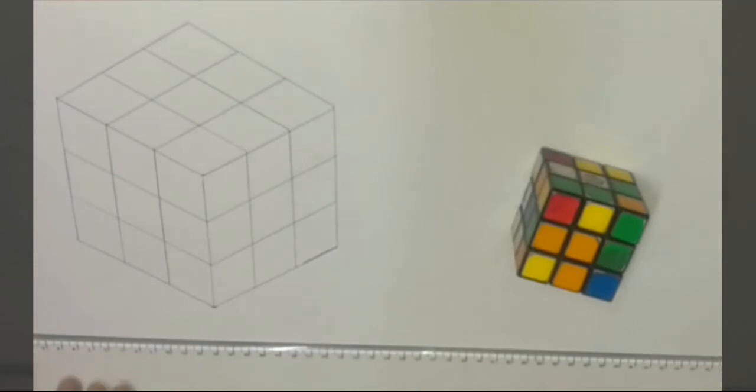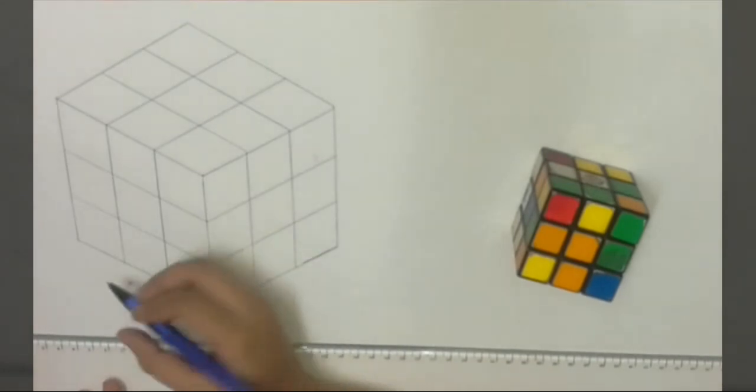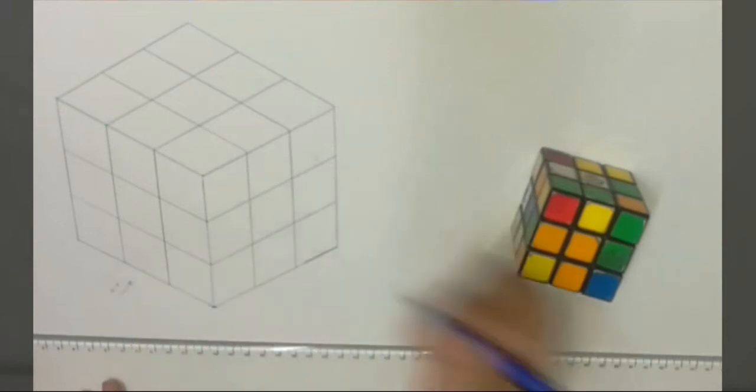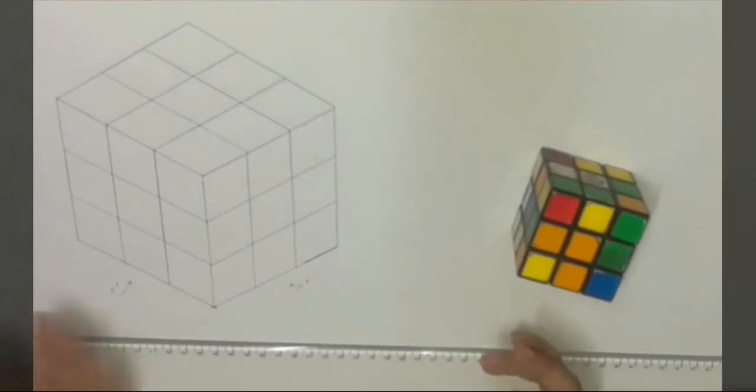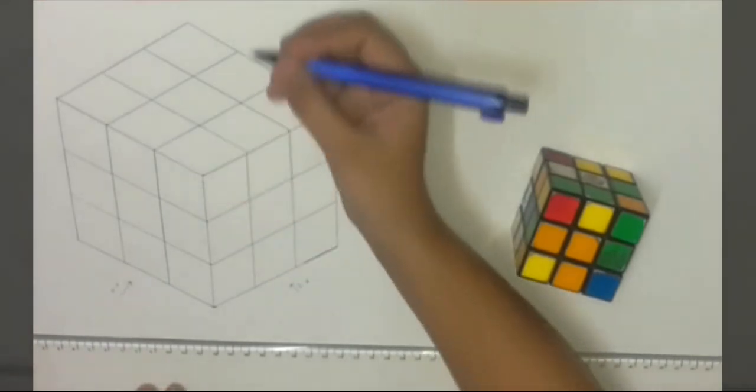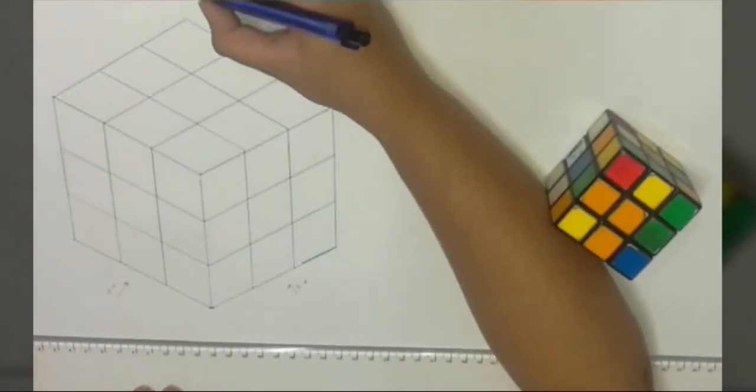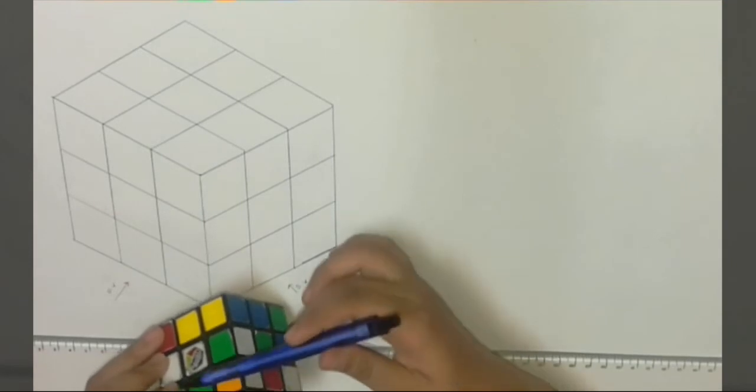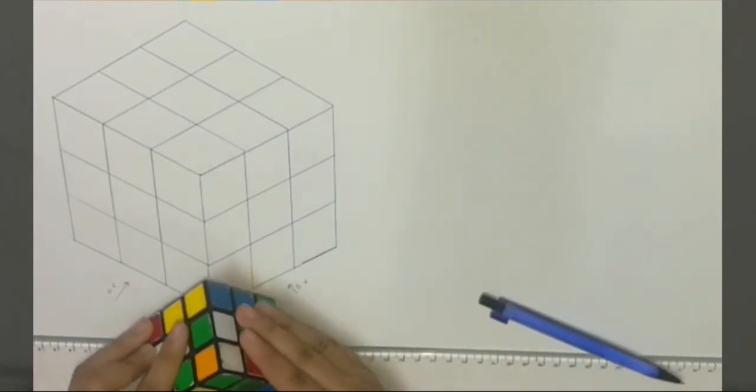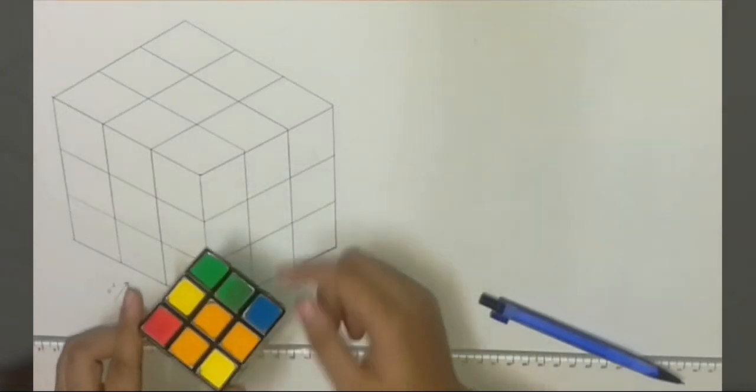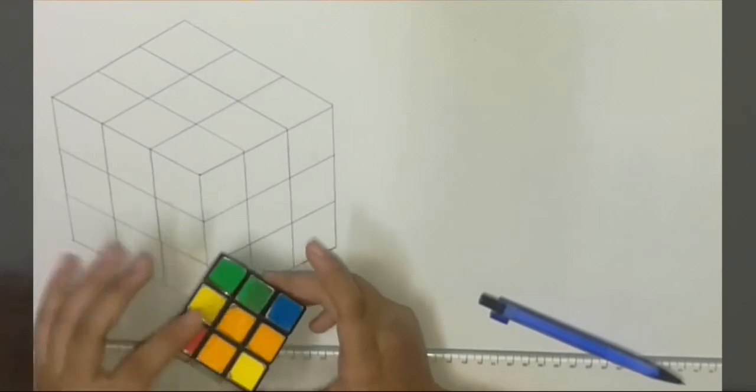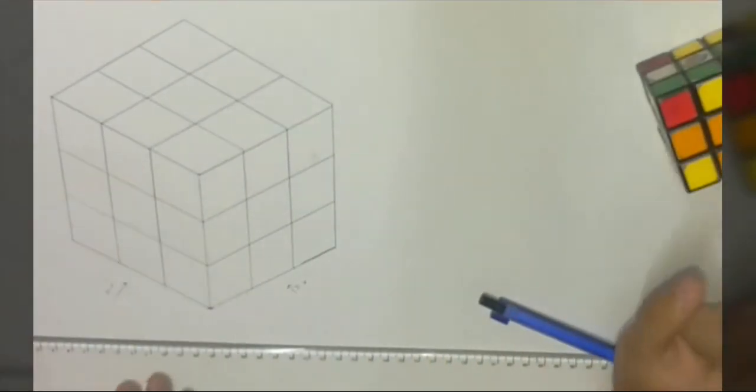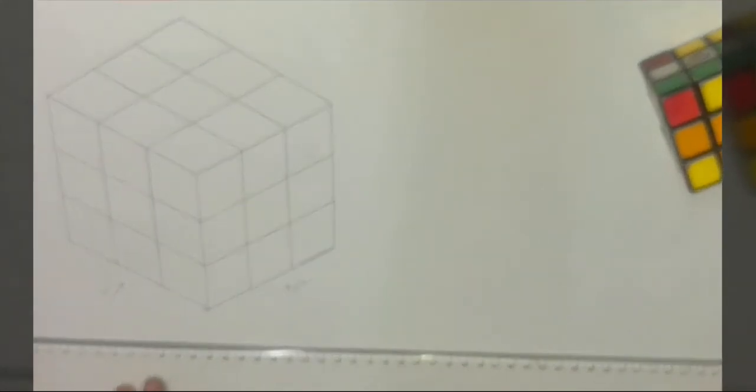Now how to look at the 3D object. This will be the front view which we will call it as FV. This will be the side view that is SV. We can call it either this as front view and this as side view, it doesn't matter. This is TV. As we can see in this object, this is a front view, this is a side view, and this will be the top view.